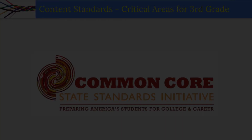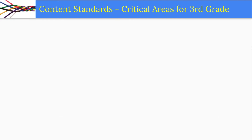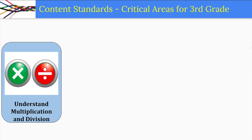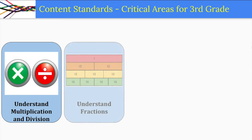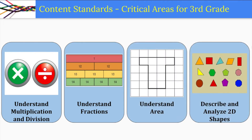The Common Core content standards identify critical areas for each grade level. All of the grades build on each other and connect to each other. In third grade, the most critical areas are understanding multiplication and division, understanding fractions, understanding area, and describing and analyzing 2D shapes.